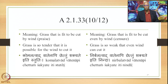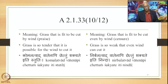Similarly, another example: Vata Chedyam Trinam — grass that is fit to be cut by wind. It could be praise: the grass is so tender that even wind can cut it. Komal atvat, Vata na pi chet tum shakye te iti stuti. Or it could be censure: the grass is so weak that even wind can cut it. These are the Adhikartha meanings, and in order to convey them the process of compounding takes place.